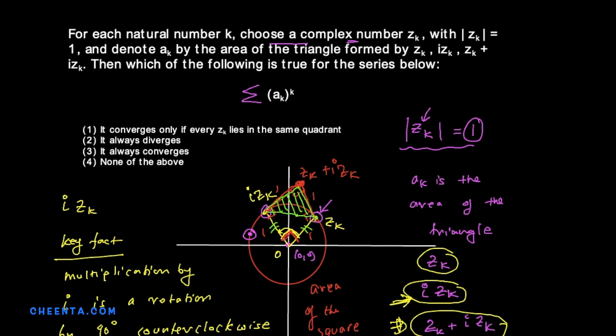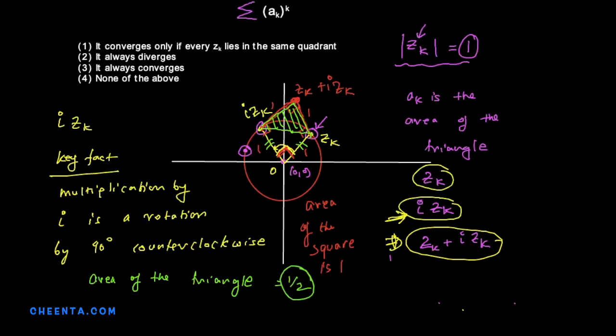Okay, so now what are we trying to do? Well, we are trying to choose zk. And we can choose any zk. We can choose it in any way we want as long as it is on the unit circle. And we are computing the area. And we know the area is half no matter what zk is. So for example, a1 is half, a2 is half, and so on, ak is half.